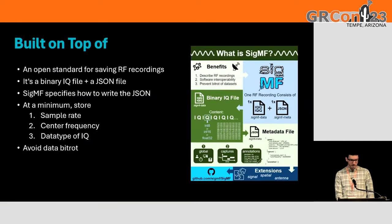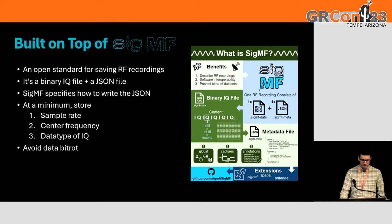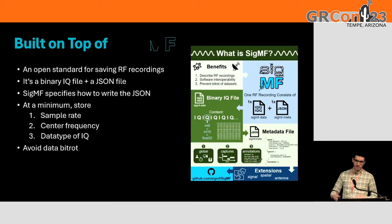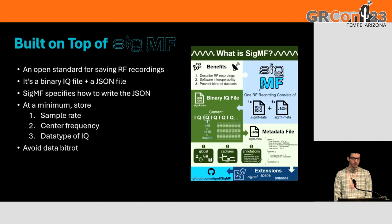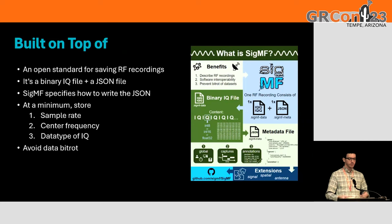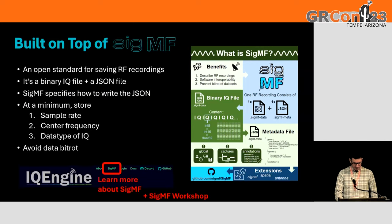IQ Engine is built on top of SIGMF. SIGMF is an open standard for saving RF recordings to disk — in contrast to sending digitized RF over the wire, like with VITA 49. IQ Engine involves having a binary IQ file and a JSON file. At a minimum, you'll want to store the sample rate, center frequency, and data type. That way you can avoid bit rot and have compatibility with tooling like GNU Radio and IQ Engine that supports SIGMF. There's a link on IQ Engine, and we also have the workshop.